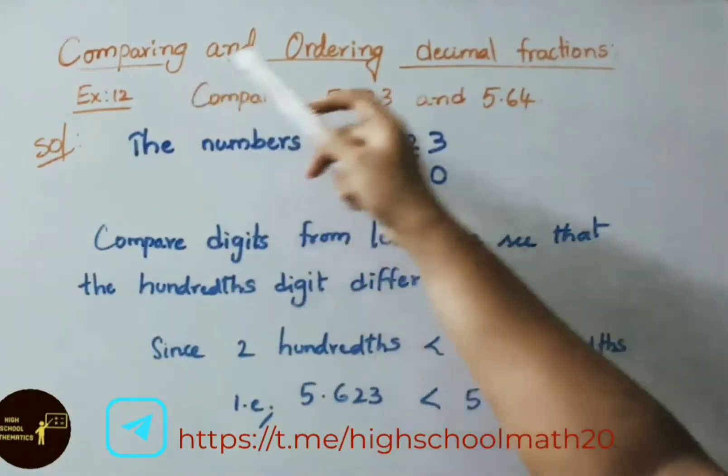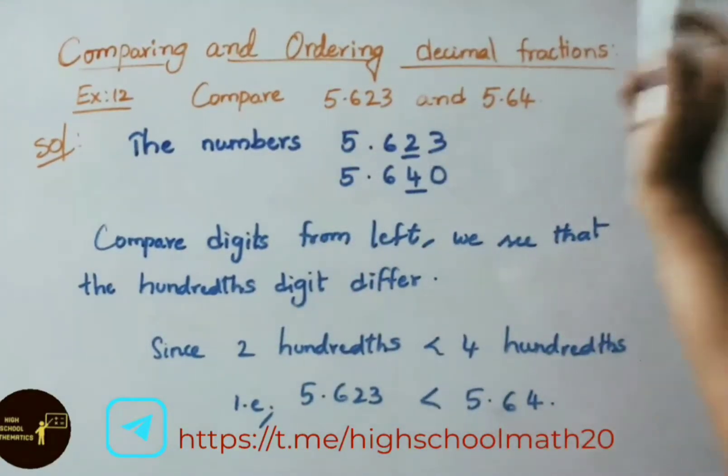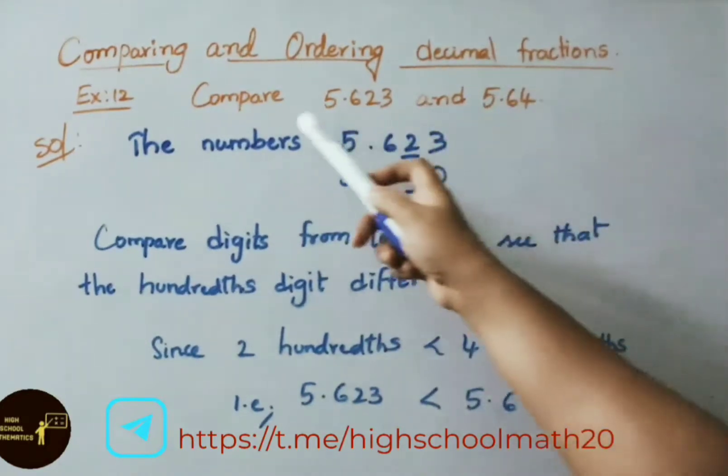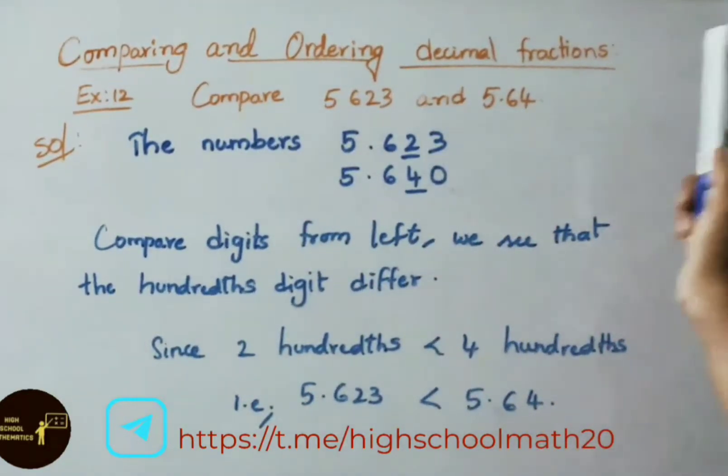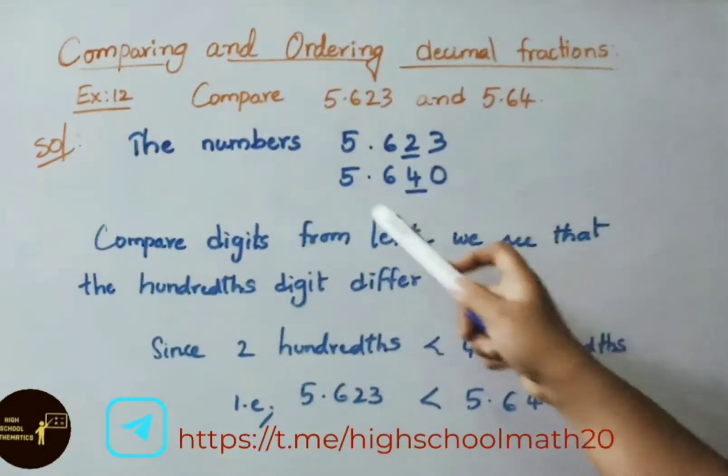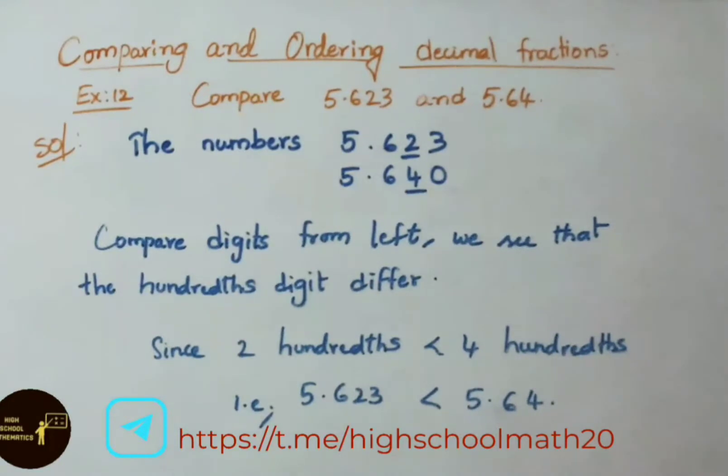Now comparing and ordering decimal fractions. Example 12: Compare 5.623 and 5.64. See the solution. The numbers 5.623, 5.640. Here 5.623 has three decimal places. 5.64 has only two decimal places. To make them equivalent we place a 0 here.